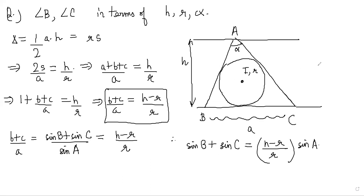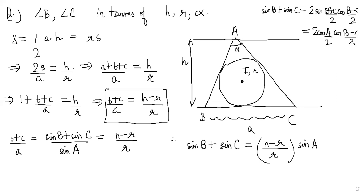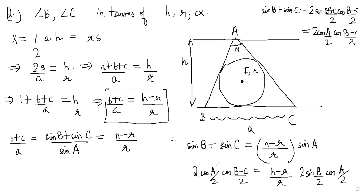Since angle A is alpha, sin A equals sin(alpha). We'll use the trigonometric identity: sin B + sin C equals 2 sin((B+C)/2) cos((B-C)/2). Now sin((B+C)/2) equals cos(A/2) because it is 90 minus A/2. So this becomes 2 cos(A/2) cos((B-C)/2). This must equal (H-R)/R times 2 sin(A/2) cos(A/2).